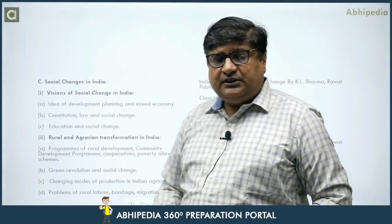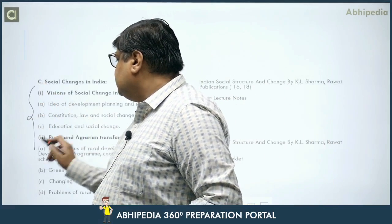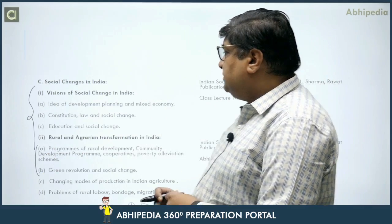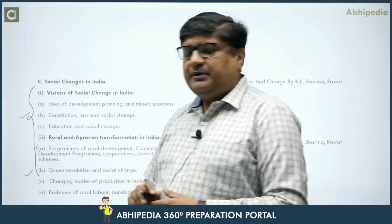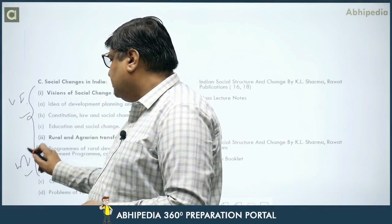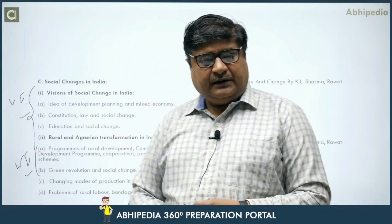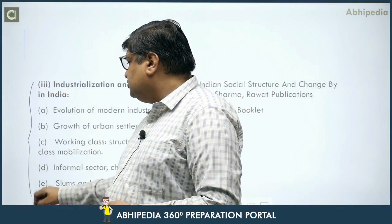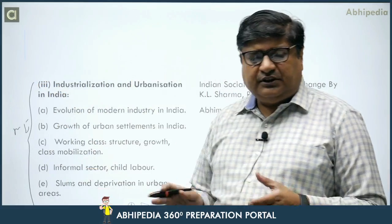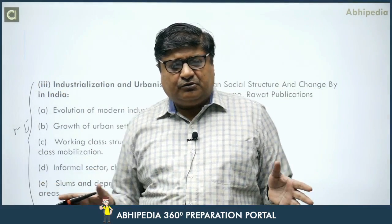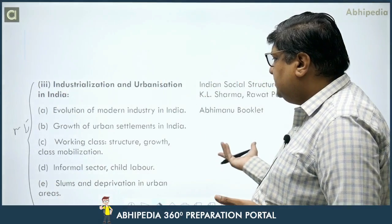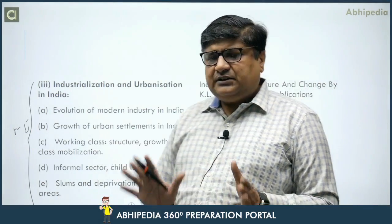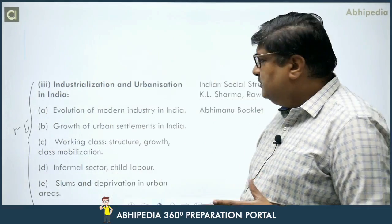Section C is the 'Vision of Social Change in India.' Agrarian and rural transformation are two very important chapters here. Then industrial and urbanization — we place this in the very important category as well. Topics include: growth of urban settlements in India, working class, informal sector, child labor, slums and deprivation. This is more than enough as far as the syllabus is concerned.